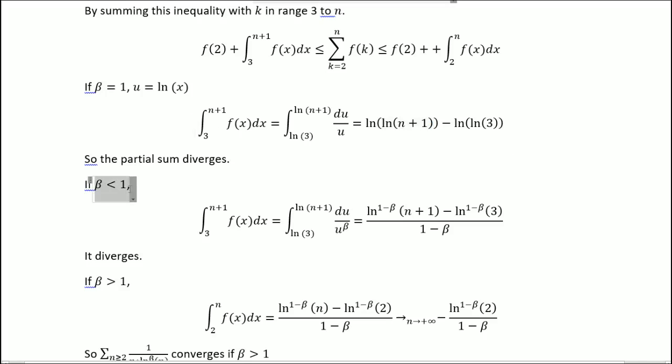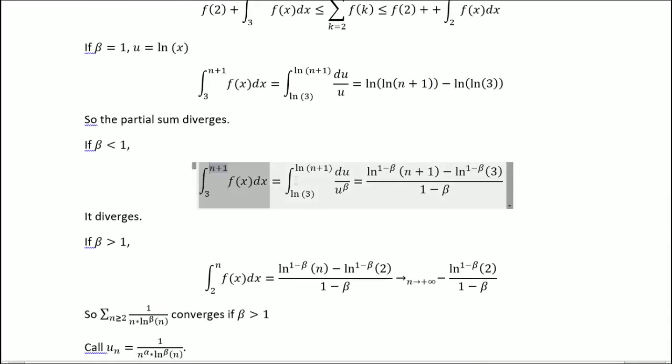If beta is inferior to 1, then we get this. And this diverges too, since this goes to infinity.